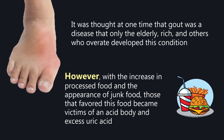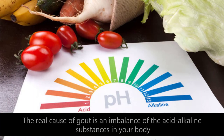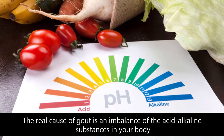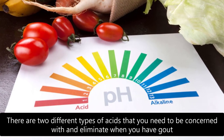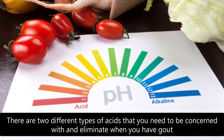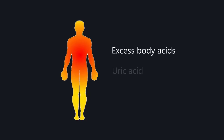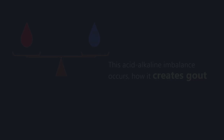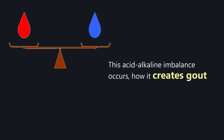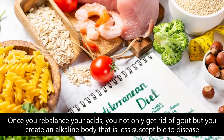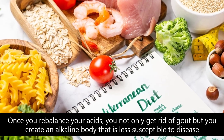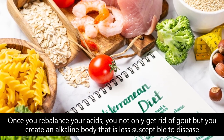The real cause of gout is an imbalance of the acid-alkaline substances in your body. There are two different types of acids you need to be concerned with and eliminate when you have gout: excess body acids and uric acid. How this acid-alkaline imbalance creates gout and what you can do about it is what this video is all about. Once you rebalance your acids, you not only get rid of gout but you create an alkaline body that is less susceptible to disease.